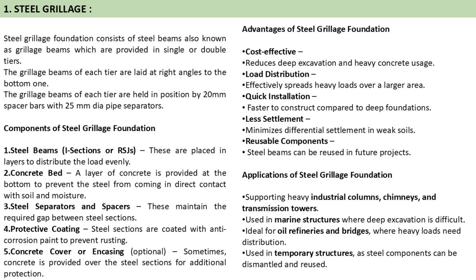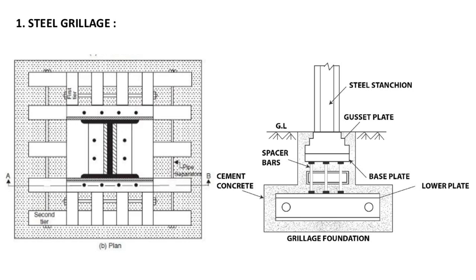Sometimes concrete is provided over the steel section for additional protection as a concrete cover. The advantages of steel grillage foundation are that it is cost-effective, load distribution is effective over a larger area, quick installation, less settlement, and reusable components. Applications include industrial columns, chimneys, transmission towers, marine structures, oil refineries, and bridges. As you can see in the plan, we have the eye bar and spacers all over with two tiers — a lower plate, then a spacer, then the base plate — covered by cement concrete. Above ground level there is a gusset plate and steel section.